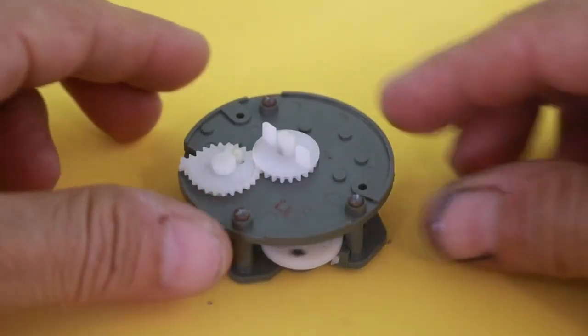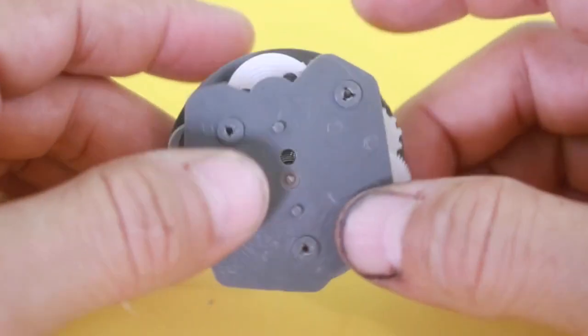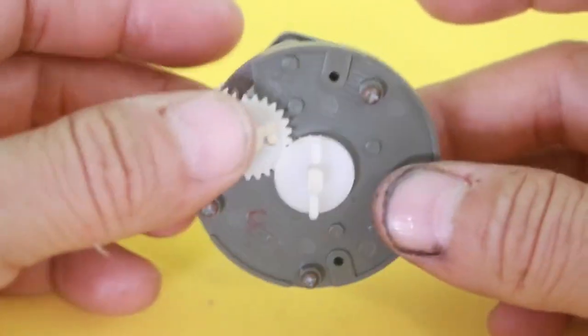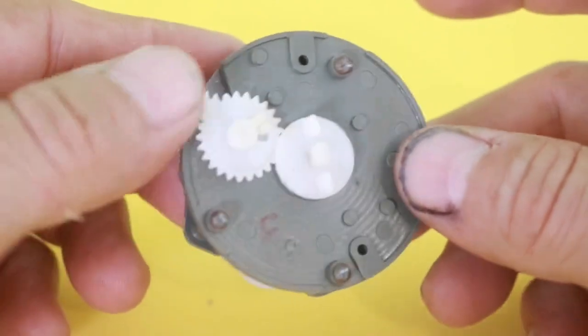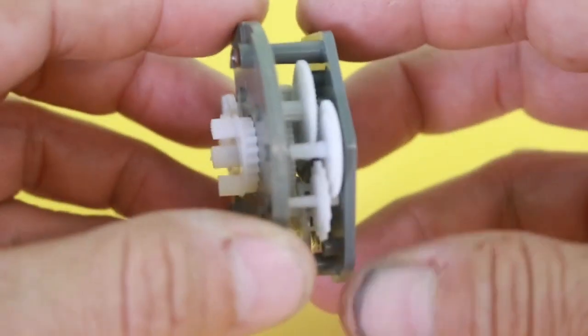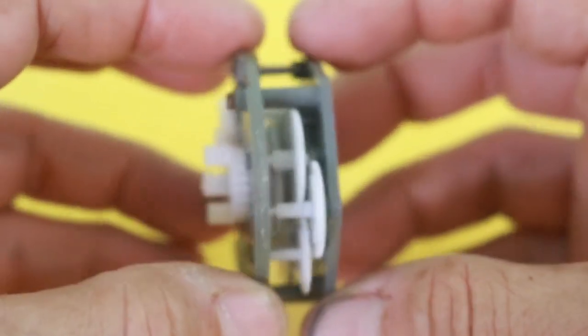What I can see is the bell that emits the sound when the mechanism reaches time zero. So I will continue to disassemble in order to find the bell and also to see more clearly the different components.